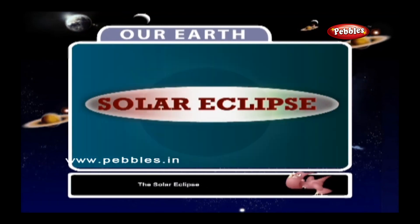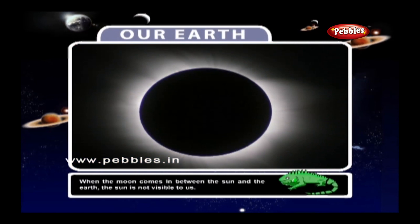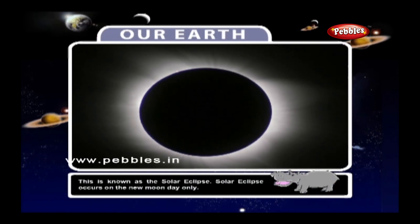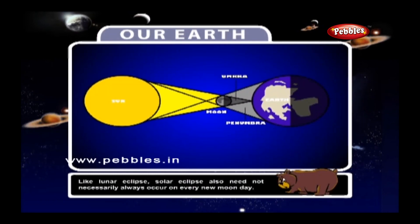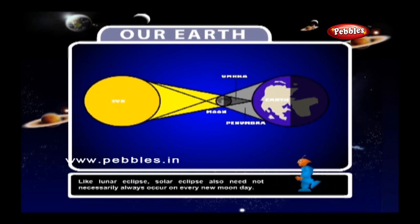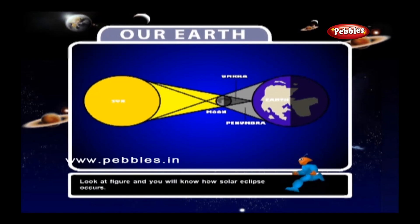The Solar Eclipse: When the Moon comes in between the Sun and the Earth, the Sun is not visible to us — this is known as the solar eclipse. Solar eclipse occurs on the New Moon day only. Like lunar eclipse, solar eclipse also does not necessarily occur on every New Moon day.